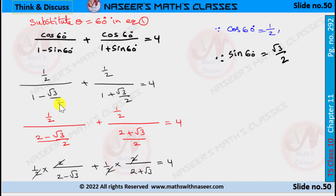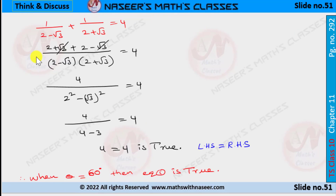Taking LCM in the denominator: 1 − √3/2 = (2 − √3)/2 and 1 + √3/2 = (2 + √3)/2. Writing the reciprocal of the denominator gives (1/2) × (2/(2 − √3)) + (1/2) × (2/(2 + √3)) = 4. Cancelling the 2s, the equation simplifies to 1/(2 − √3) + 1/(2 + √3) = 4. Taking LCM as (2 − √3)(2 + √3), the numerator is (2 + √3) + (2 − √3).